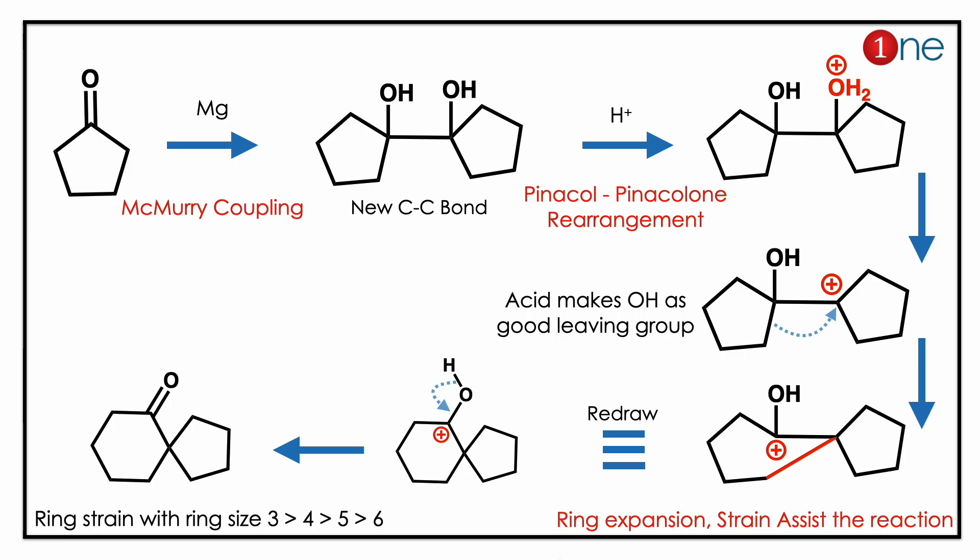You have a cation in the system with a five-membered ring. Here, ring expansion is possible because ring strain is relieved — strain assists the reaction. So the cation is near the alcohol. If you redraw nicely, you have a six-membered ring, a five-membered ring, and a cation near the OH group.